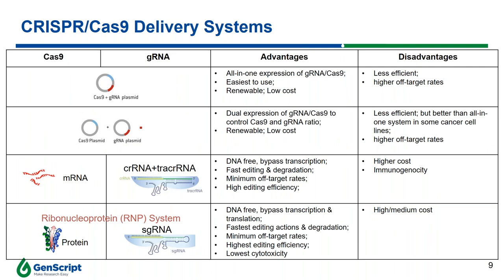There are two different plasmid systems available: a single plasmid system encoding both guide RNA and Cas9 simultaneously, and a dual plasmid system expressing them separately. The advantages of plasmid systems are ease of use and low cost. However, studies have shown that plasmid systems are less efficient and have higher off-target rates. Comparing the two, the dual plasmid system has shown better editing efficiency in some cancer cell lines.